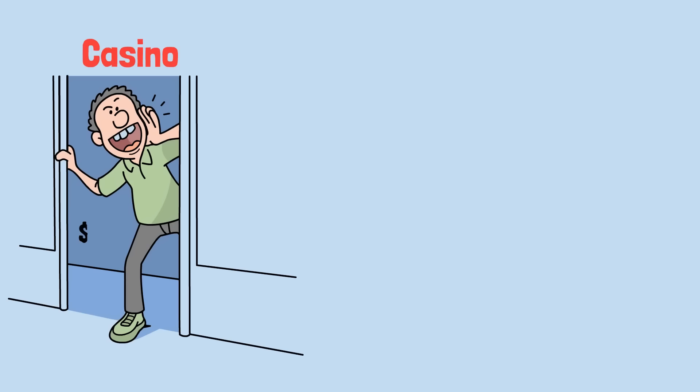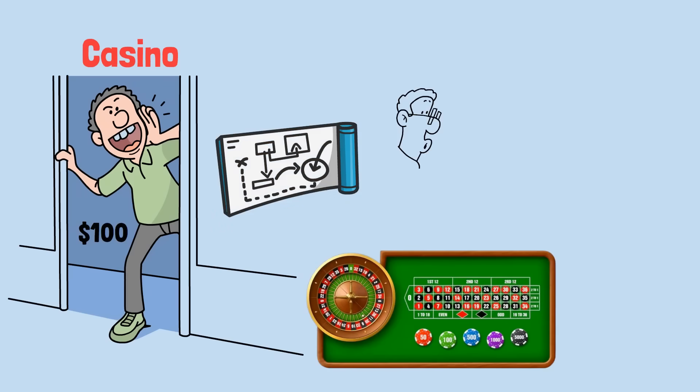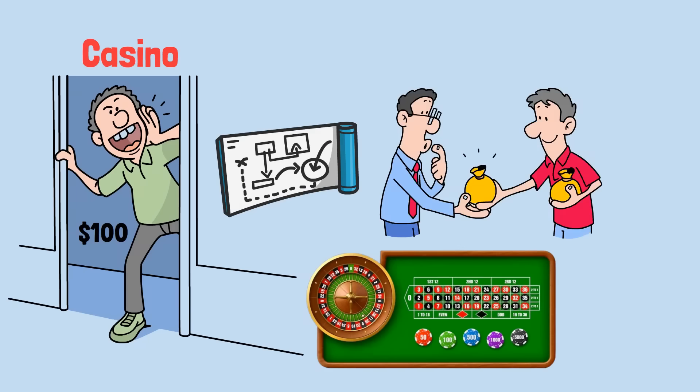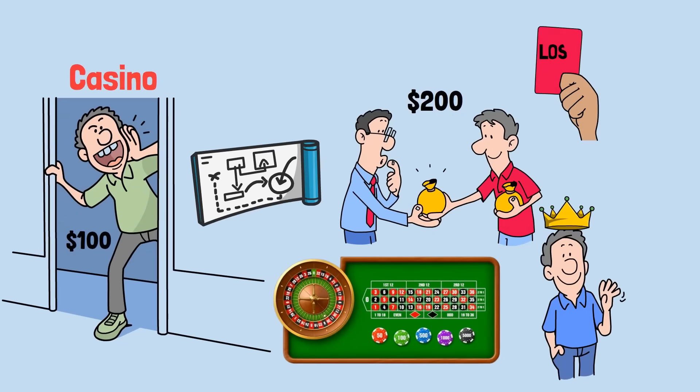Bob walks into the casino with exactly $100 in his pocket. His strategy is elegantly simple: bet everything on Red at the roulette table. If he wins, he doubles his money to $200, pockets his $100 profit, and walks away victorious. If he loses, he's broke and goes home empty-handed.